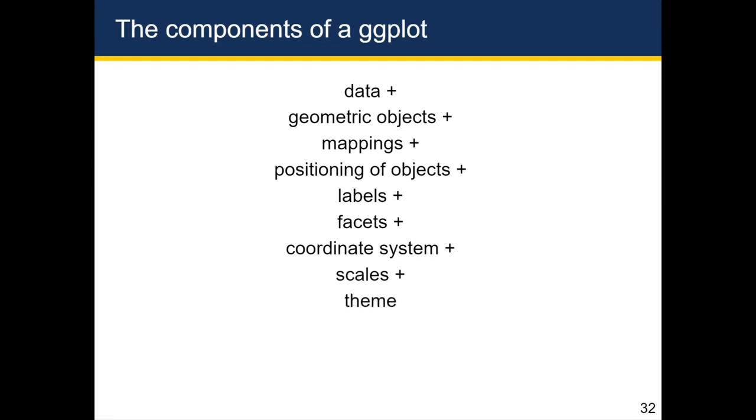A coordinate system might be like a polar coordinate system in a pie chart versus a Cartesian coordinate system for a bar chart. Because you're not actually changing any of the data, you're just changing the coordinate system on which that data is being shown to the viewer. Scales include things like color scales or can include the actual X and Y axes. And then theme has to do with appearance of a plot. So do you want it to look a specific way, which has nothing to do with the data or the underlying relationships being shown, but just the overall appearance. And if you add these things together, you get a ggplot.